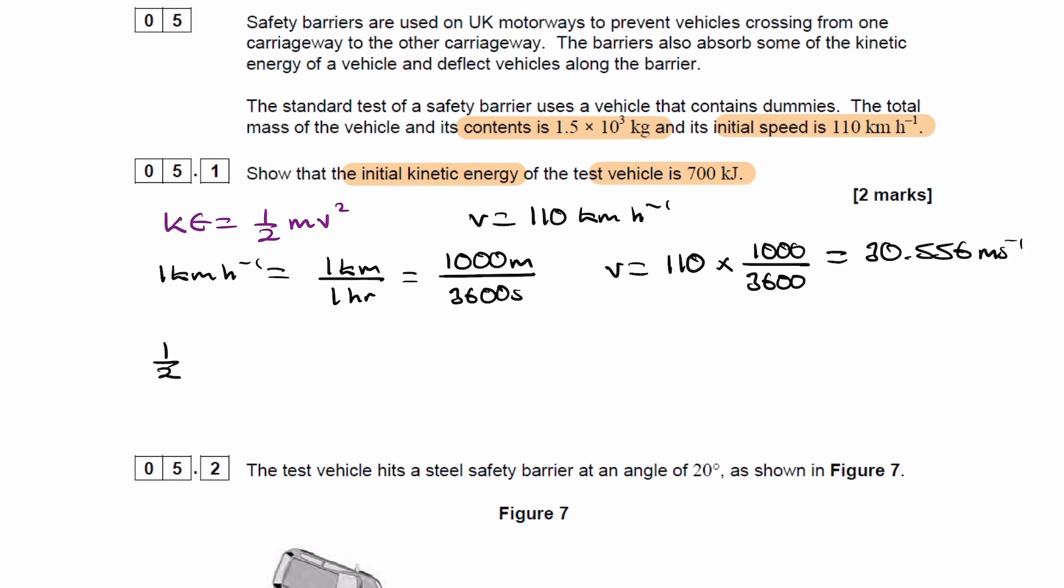And then we can put this into half mv squared. So it'll be a half times 1.5 times 10 to the 3, times 30.556 squared, which would be about 700,000 joules.